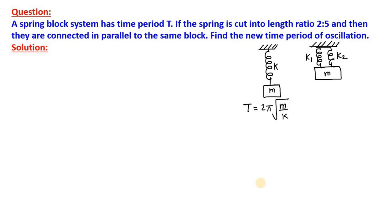Here, we will find out the time period also. A spring block system has time period T. This spring block system having block of mass m and a single spring of spring constant K is having a time period T which should be 2 pi root of m by K, standard formula.